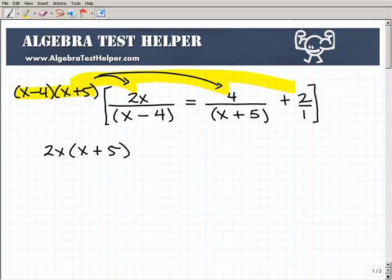The first one, the (x - 4)s cross-cancel, so we're left with 2x(x + 5). Now, what's our second term? We have (x - 4)(x + 5) times 4/(x + 5). So here you can see the (x + 5)s this time are going to cross-cancel. So you're going to be left with 4(x - 4). And if you don't see how I'm doing it, definitely write it out so you can see what's going on here. This is critical.